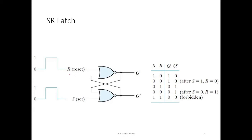It has two external inputs: Set, represented as S, and Reset, represented as R. There are two useful states for this SR latch. One is the set state and the other is the reset state. The set state has Q equal to 1, and Q-bar represents the complement of Q, so Q-bar becomes 0. The reset state makes Q equal to 0 and Q-bar correspondingly 1. These are the two useful states, and let's see how we are able to store this information.